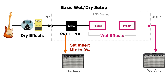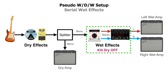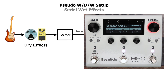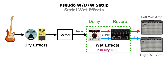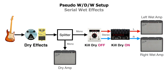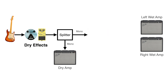In true wet/dry or wet/dry/wet rigs it's not advised to put wet effects in series with each other — just imagine putting a fully wet delay into a fully wet reverb. Some users might set the first effect's Kill Dry to off and the second to on to preserve some dry signal, which is common for combinations like modulation in series with a delay, or a delay in series with a reverb. Nonetheless, because dry signal is present in the wet section, this is not a true wet/dry setup. To provide the best clarity and stereo image, traditional wet/dry/wet setups run the wet effects in parallel.